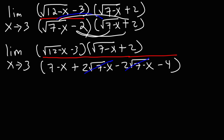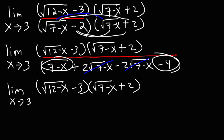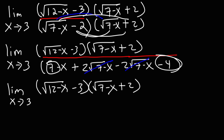So 7 minus 4 gives us the denominator. Let's simplify the result. We have the limit as x approaches 3 of the square root of 12 minus x, minus 3, times the square root of 7 minus x, plus 2, all over 7 minus x minus 4. Now 7 minus 4 is 3, so this simplifies to 3 minus x.